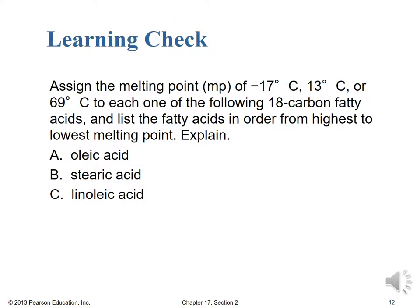Learning check: assign the melting point of −17°C, 13°C, or 69°C to each of the following 18-carbon fatty acids, then list them from highest to lowest melting point and explain your reasoning. The three fatty acids are oleic acid (monounsaturated, 18 carbons), stearic acid (saturated, 18 carbons), and linoleic acid (polyunsaturated, 18 carbons). Stop the video, make your determination, and start it back up when you're ready to check your work.